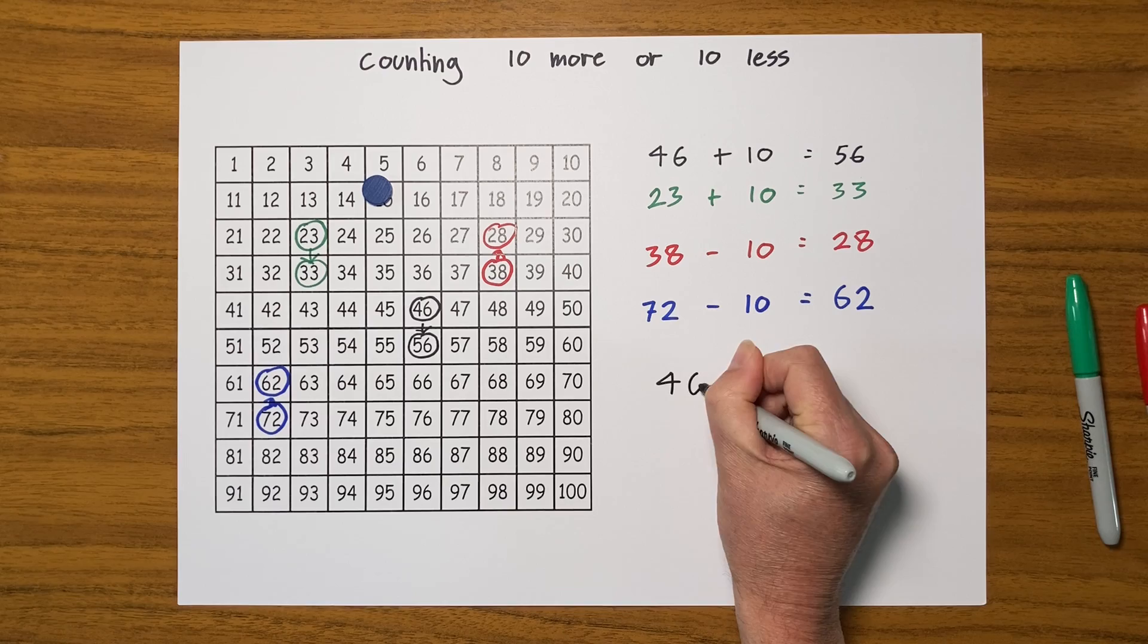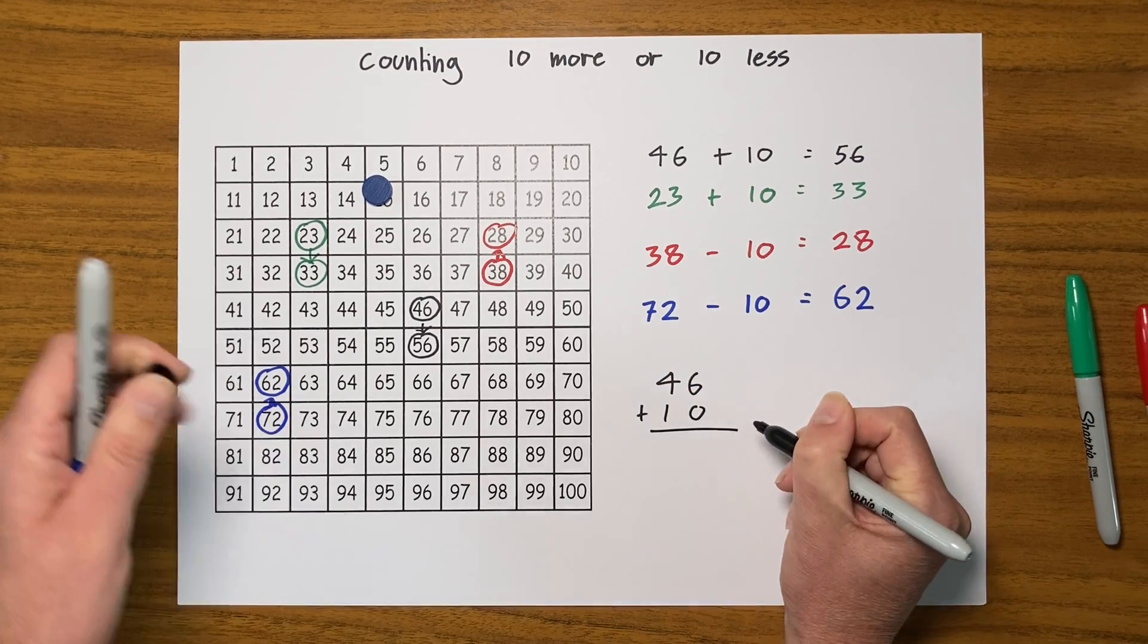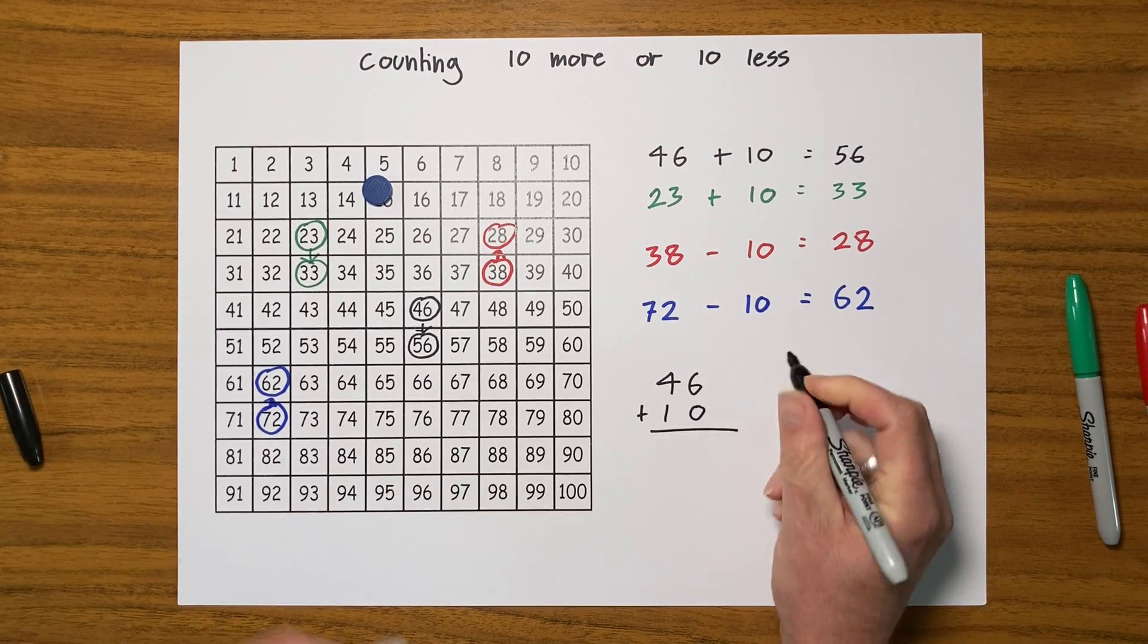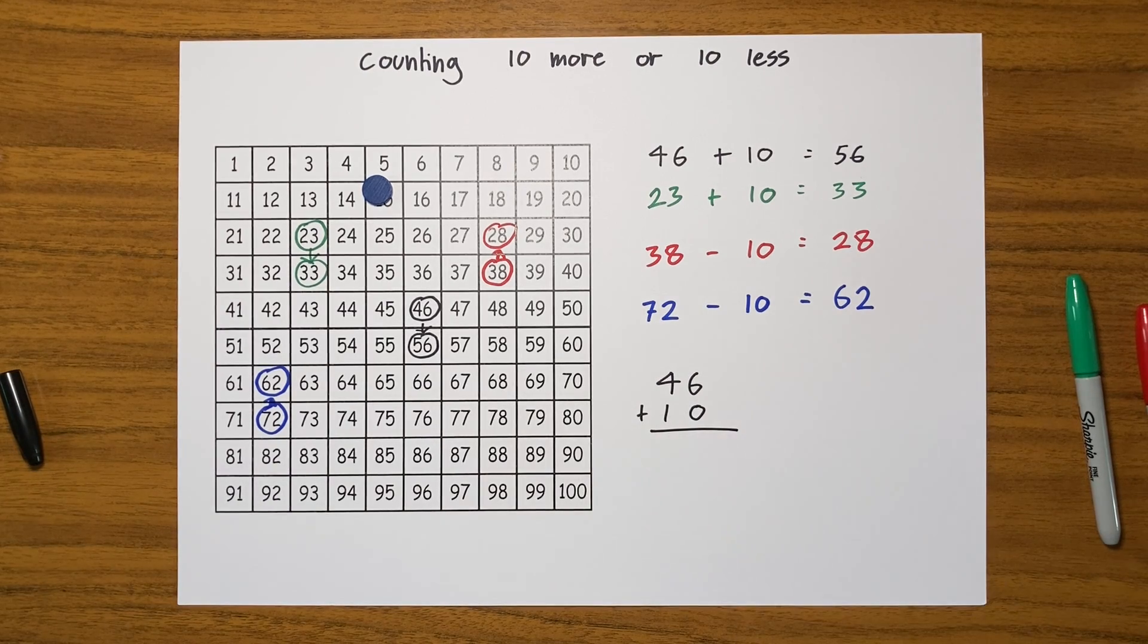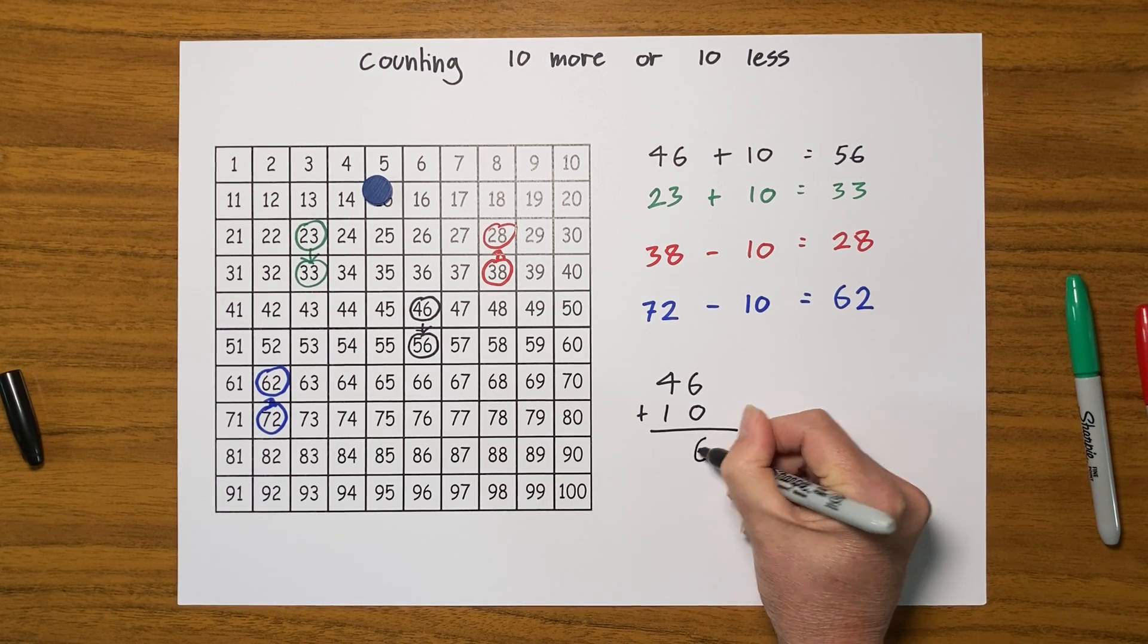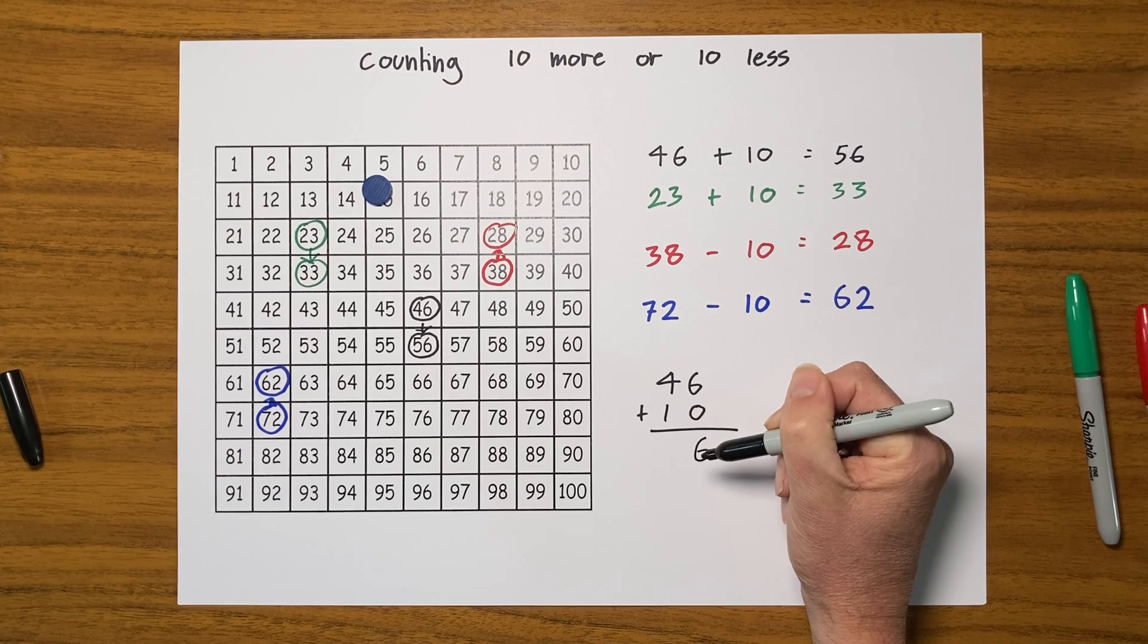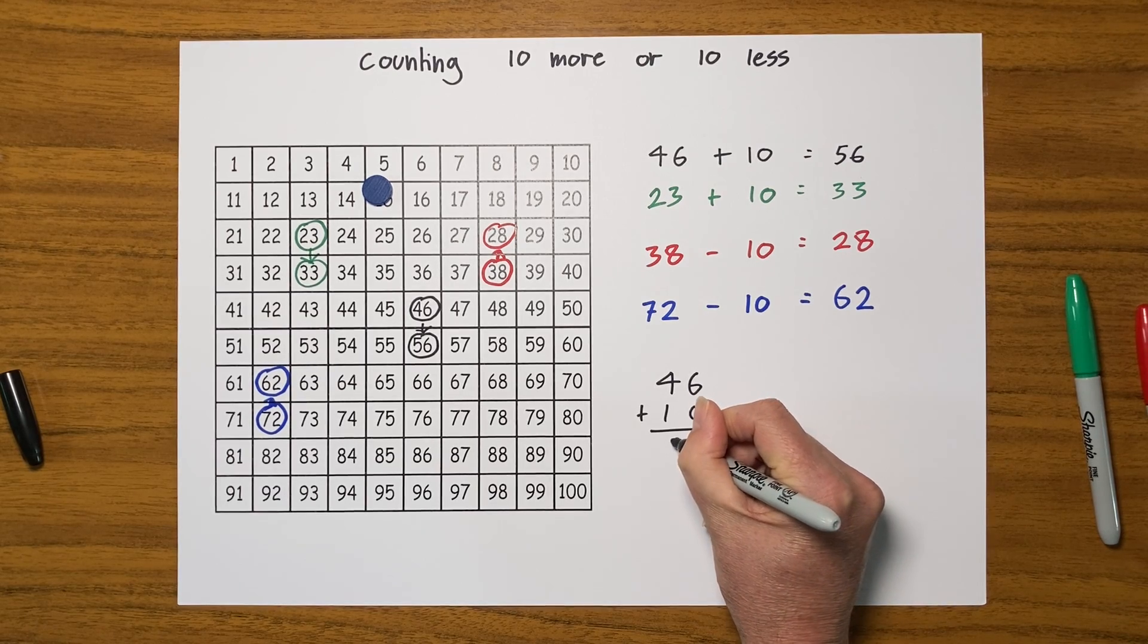And that's sometimes a bit easier to see if we write them on top of each other. So if I do 46 add 10, here I've got six units add no units, so I must still have six units. And here I've got four 10s and one 10, so I must have five 10s.